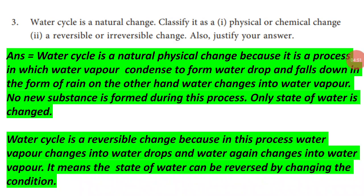Third, water cycle is a natural change. Classify it as a physical or chemical change and as a reversible or irreversible change. Also justify your answer. Answer: Water cycle is a physical change because it is a process in which water vapor condenses to form water drops and falls down as rain; on the other hand, water changes back into water vapor. No new substance is formed during this process — only the state of water is changed. Water cycle is a reversible change because water vapor changes into water drops and water again changes into water vapor, meaning the state of water can be reversed by changing the conditions.